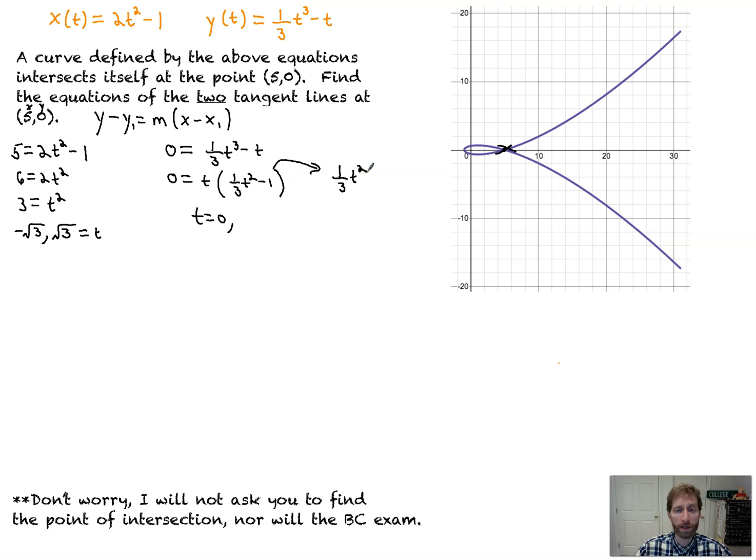So I'll do that out to the side. 1/3 t² is equal to 1, essentially. So when we solve that out, we get t² is equal to add 1, multiply by 3, 3. Nice! So t is equal to plus or minus root 3.